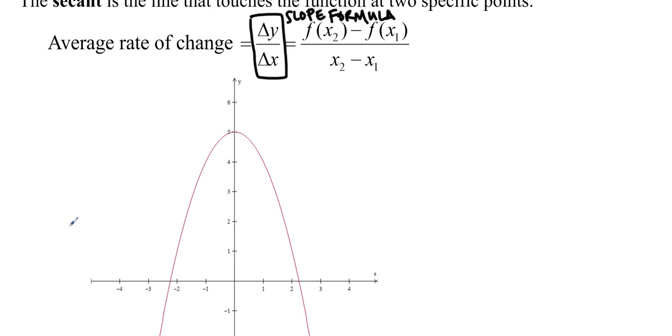So sometimes we just want to know what the average rate of change was. So from this point, x equals negative 1, to this point, x equals 2, how far did we change? How far did we go in a certain amount of time? What is the speed?